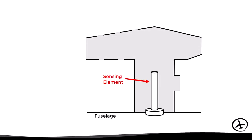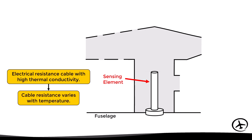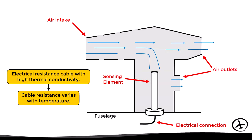Inside, we have the sensing element, which consists of an electrical resistance cable with high thermal conductivity. This means that the electrical resistance varies with temperature and can therefore be easily measured. The measured temperature is transmitted via an electrical connection to the instruments and other systems. Air enters through the intake, where part of it continues along and the rest passes around the sensing element before exiting through the air outlets. This design allows for a constant flow of air through the sensor and prevents water or dirt from accumulating inside the probe. The structure also has bleed holes which prevent excess pressure from building up inside.